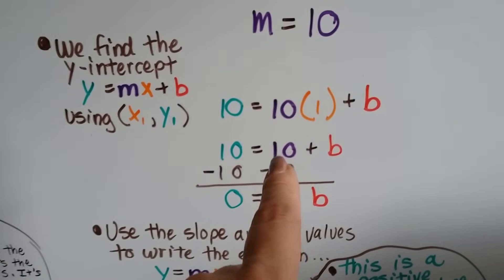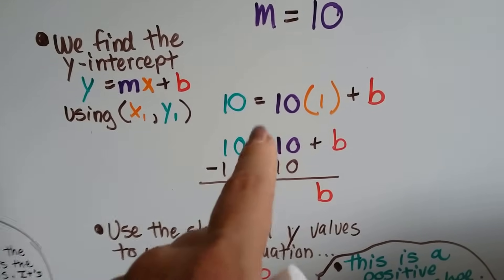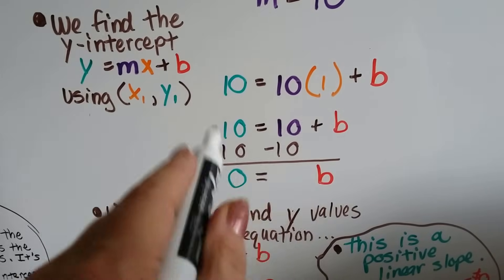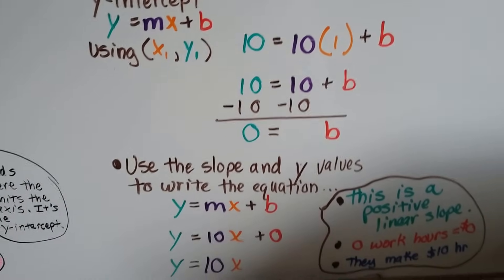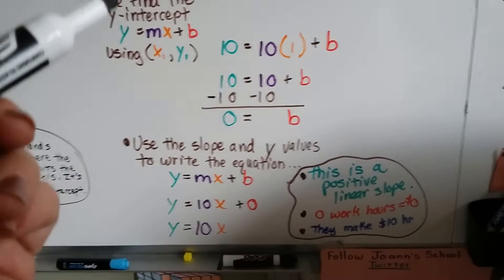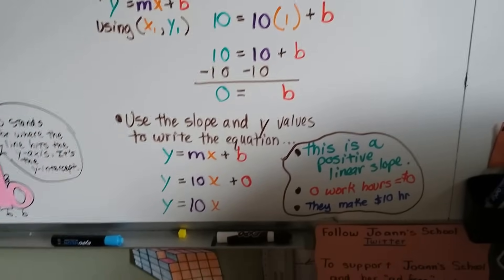So, 10 times 1 is 10. So, now we've got 10 equals 10 plus b. If we subtract 10 from both sides, we get 0 equals b. Now, we know what the b equals. We know what y is. We know what m is. We know what b is.